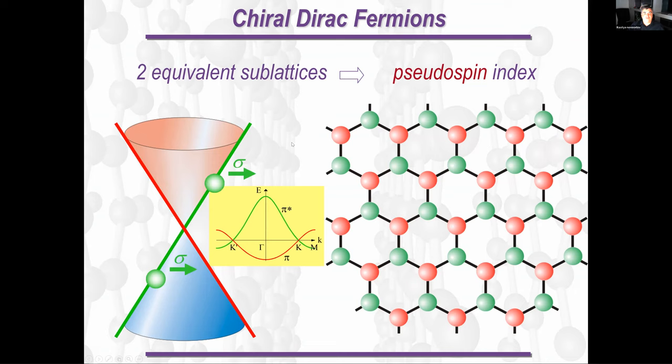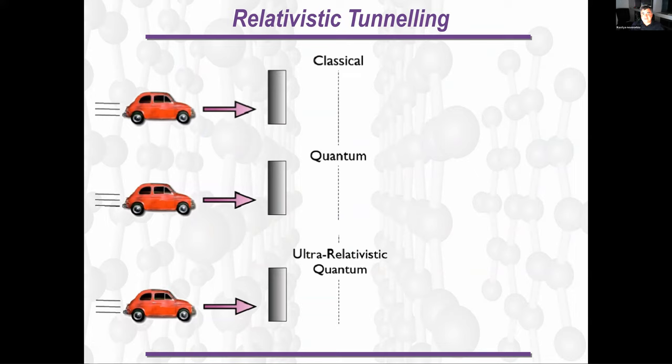Usually, kinetic energy is quadratic in momentum. Here we have a bit unusual relations for energy. It is linear with momentum, just like light or photons. And because of that, we have a number of really unique electronic and optical properties in this material. I'm not going to go too deep into physics.